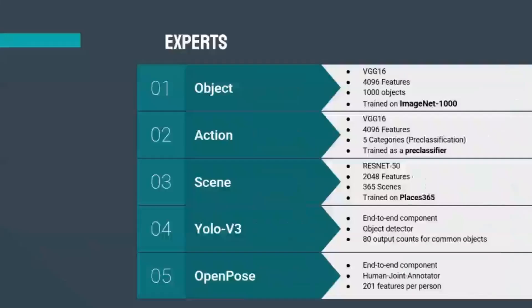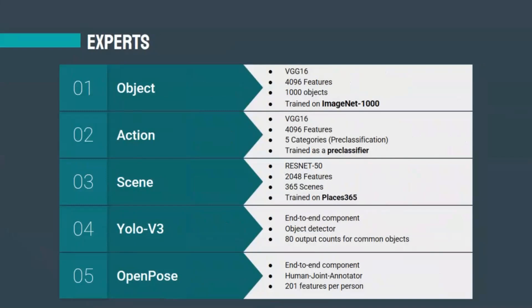In our architecture we incorporate five semantic experts, because the human ability to understand and recognize activities from images integrates information sources such as context, objects, and so on. The first expert is an object classifier based on the VGG16 architecture trained on ImageNet 1000, producing 4096 low-level early features and classifying 1000 specific objects as late features. The second expert is also a VGG16 classifier but pre-trained on the BU101 dataset, with 4096 early features and five human activity categories as output.